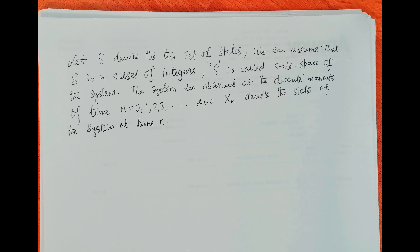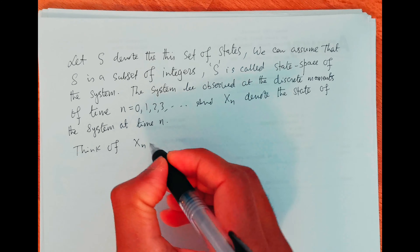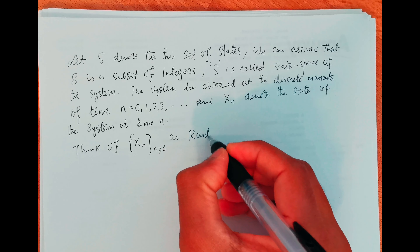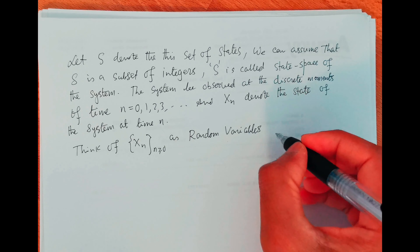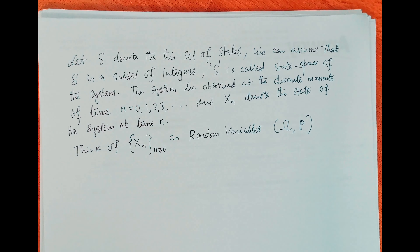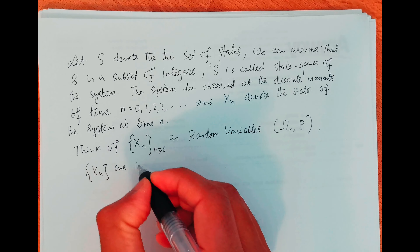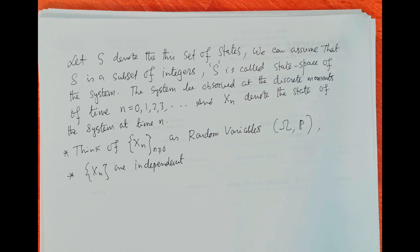We are interested in systems which are non-deterministic, so we think of X(n) as random variables. They are defined on some common probability space. The simplest possible structure we can give these random variables is that X(n) are independent.